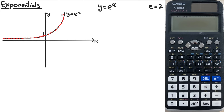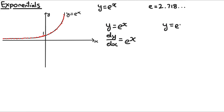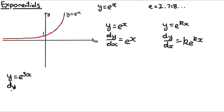You can get the value of e on your calculator by pressing alpha and then the times 10 to the power of x button. From this, if y equals e to the power of x, then dy/dx is also e to the power of x. Furthermore, if y equals e to the power of kx, then dy/dx equals k times e to the power of kx. For example, if y equals e to the power of 3x, then dy/dx equals 3e to the power of 3x.